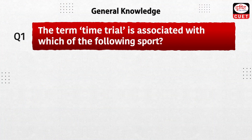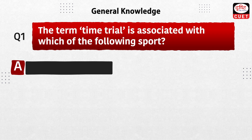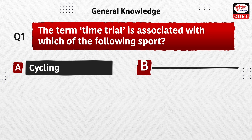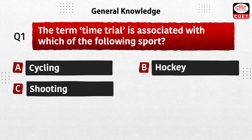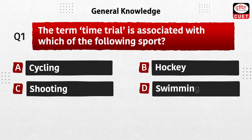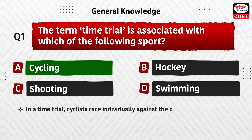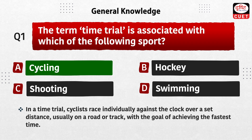First question: the term 'time trial' is associated with which of the following sport — cycling, hockey, shooting, or swimming? The correct answer is cycling. In a time trial, cyclists race individually against the clock over a set distance, usually on a road or track.